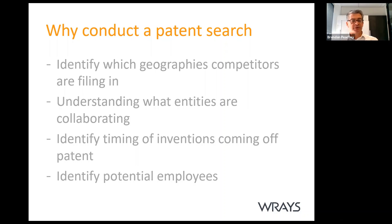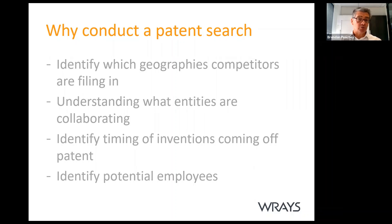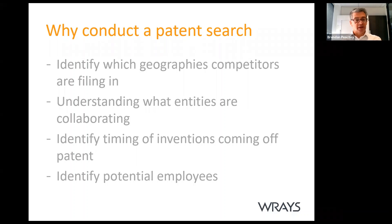Published patent applications show you who the owner is. If there are collaborations between entities — for example, a university — an application may be filed jointly, giving you good insight into which parties are collaborating or which companies are being spun out of research organizations. A patent lasts 20 years from the filing date, so you can work out exactly when a patent is going to expire, after which there's no barrier to entry for you.